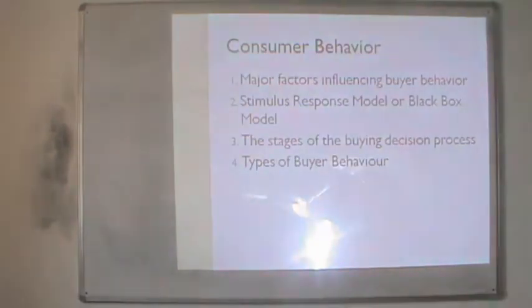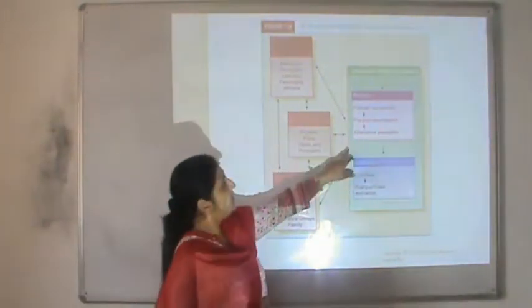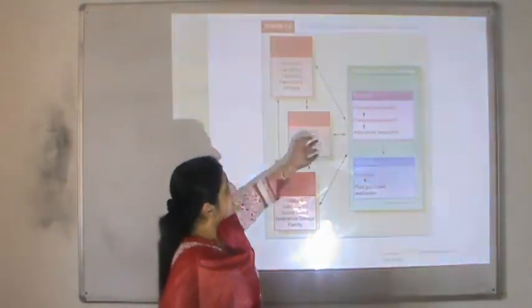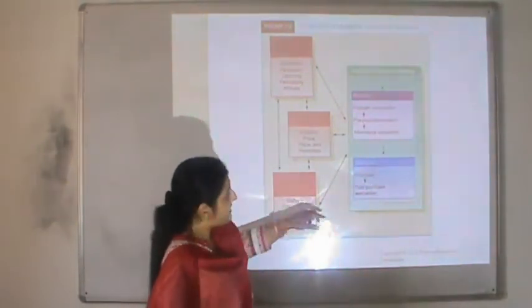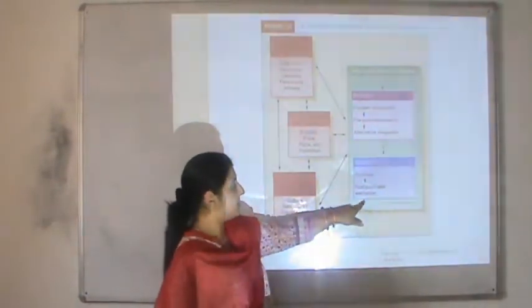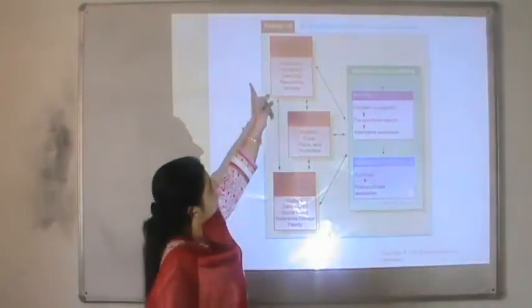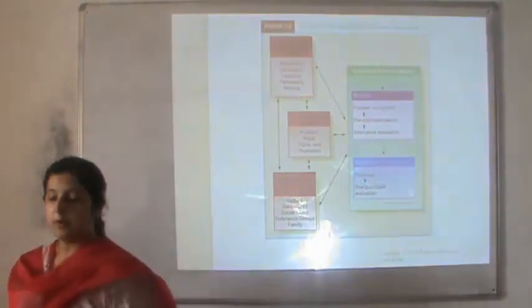Looking more closely at the consumer behavior process, the first three stages of decision-making get affected by almost all three types of factors, whereas the last two processes in turn have an effect on other factors which get settled into the minds of consumers on the basis of their experiences, observations or learning.